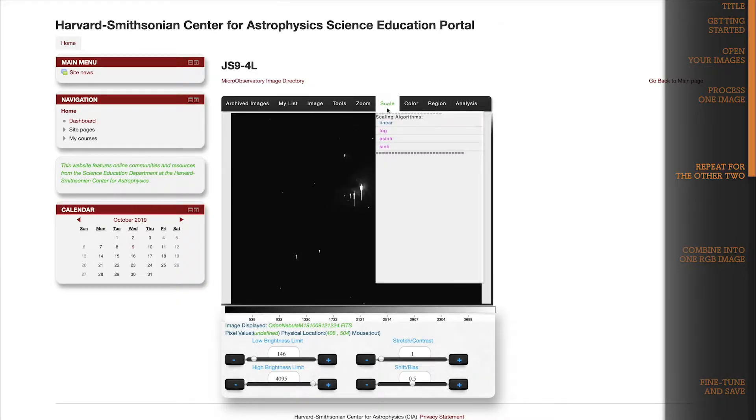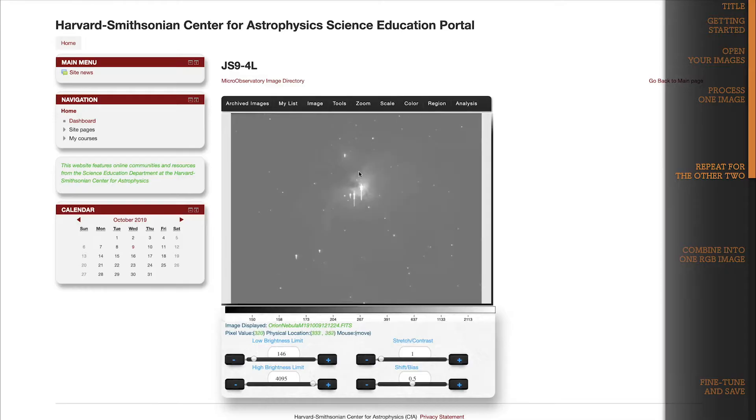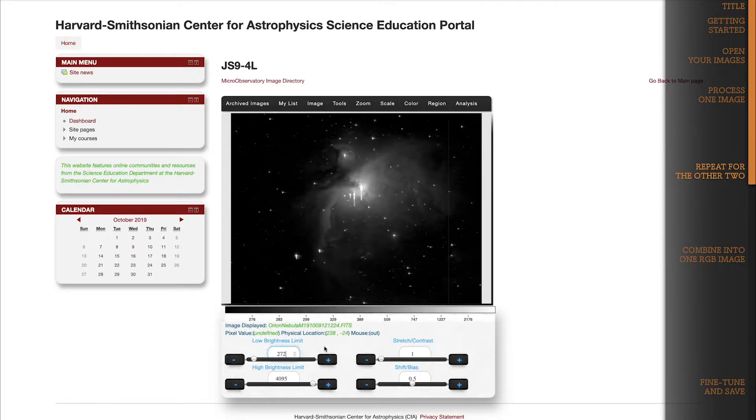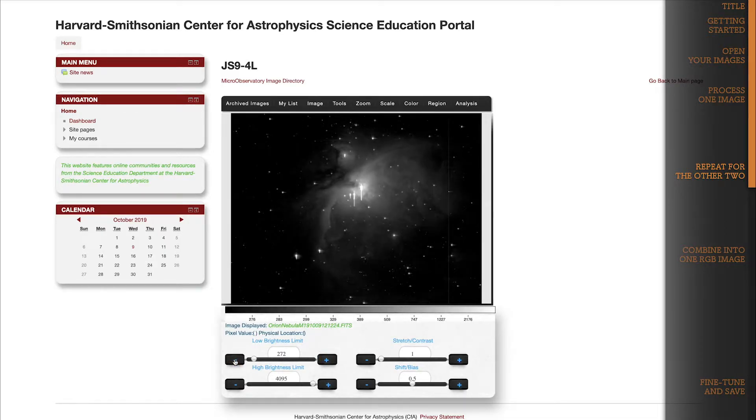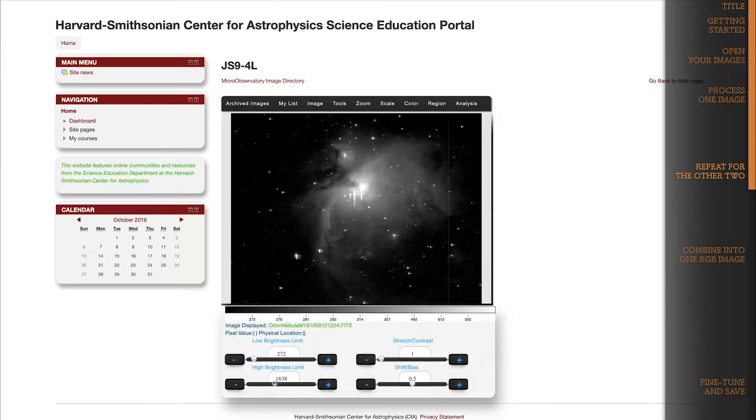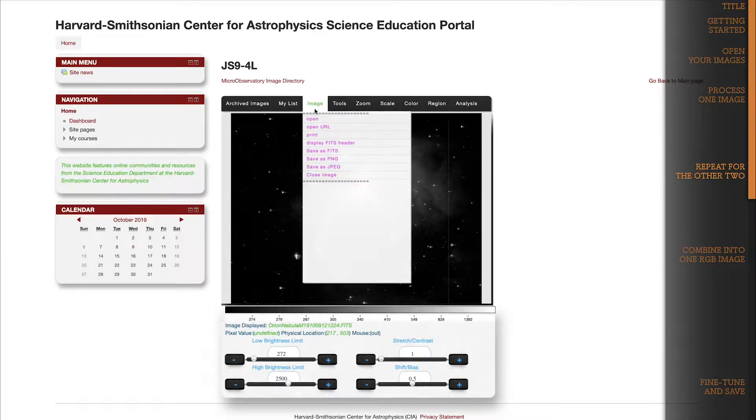Okay, quick run through. Change the scale to Log. Find the minimum pixel value of the background sky, something like 272 maybe. Update the low brightness limit. That looks good. Update the high brightness limit to whatever looks best to you. Alright, and now we're going to color the image again. Remember how to check what filter was used? Exactly, check the FITS header up here under the image dropdown.